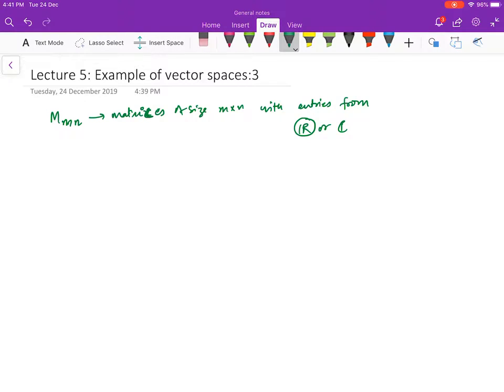Mmn forms a vector space over the field from which the entries are taken. This was the fifth example, over R. The operations are defined as follows: you have matrices of a fixed size, say 2×3, and another matrix also of the same fixed size m×n.